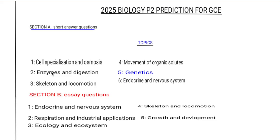The next topic is enzymes and digestion. Know the different types of enzymes and their role in digestion. For example, amylase — know the function of amylase, where it works, and whether it operates in an acidic or alkaline environment.